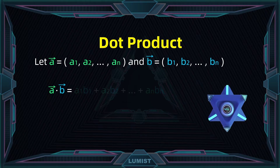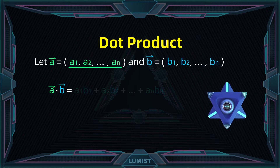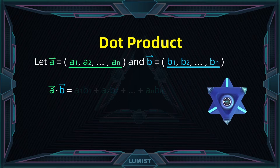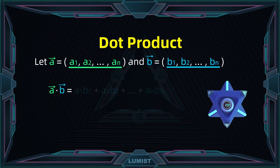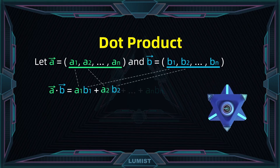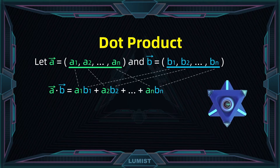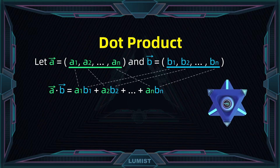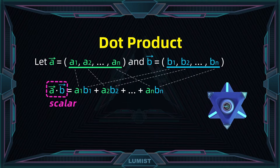So here we have a being a1 to an, and b being b1 to bn. Then the dot product a dot b would be: we take the first entry of both vectors, a1 and b1, multiply them together, then take the second entry, a2 and b2, multiply these two together as well. We do this for all pairs of corresponding entries, and then finally we calculate their sum. Notice that the dot product will come out to be a scalar — a single number.